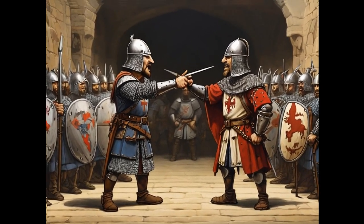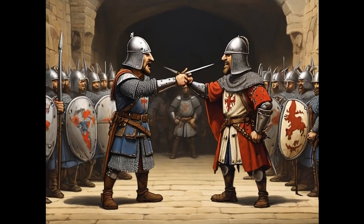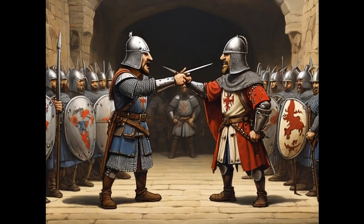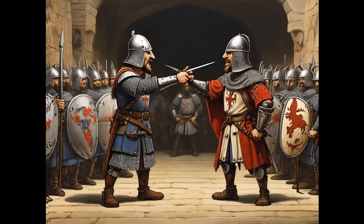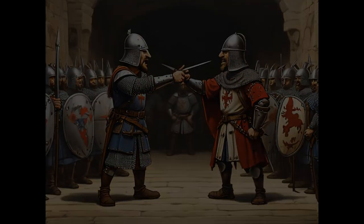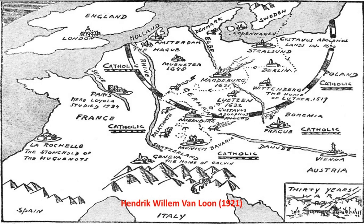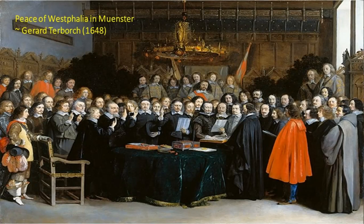Scholars speculate that it was this infighting that helped prevent the Bohemian Reformation from spreading throughout Europe. The Bohemian Reformation continued for two more centuries, and sparked the Thirty Years' War from 1618 to 1648. Following the Peace of Westphalia, and invoking the doctrine of whose realm his religion, the Habsburg king forced the Hussites to convert to Catholicism.